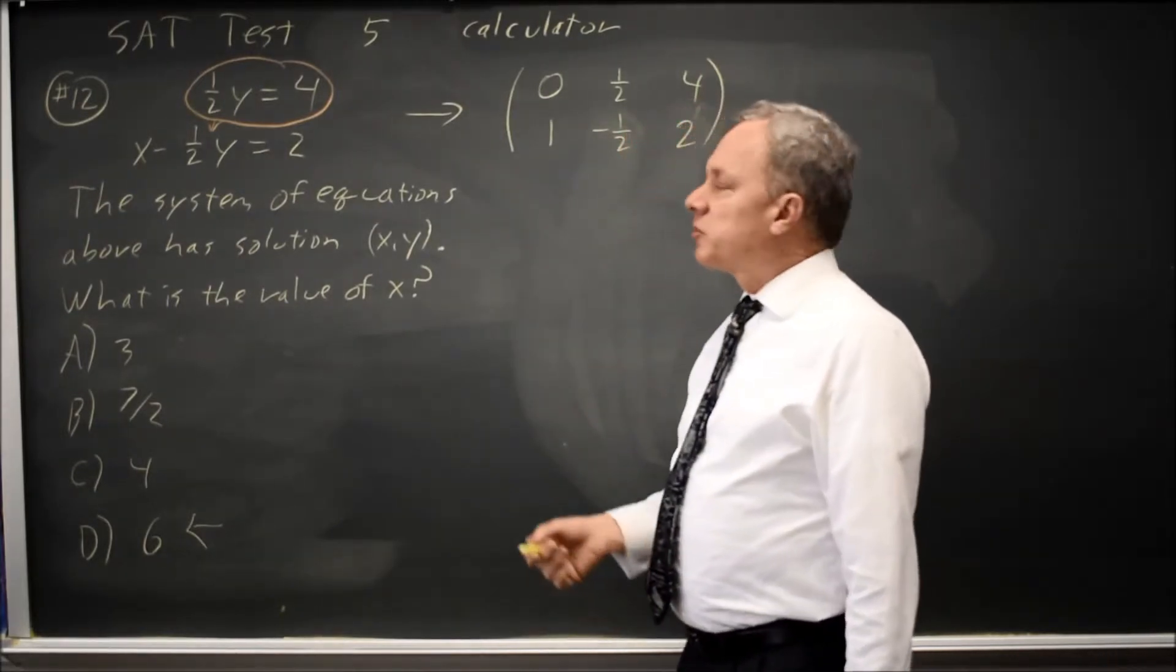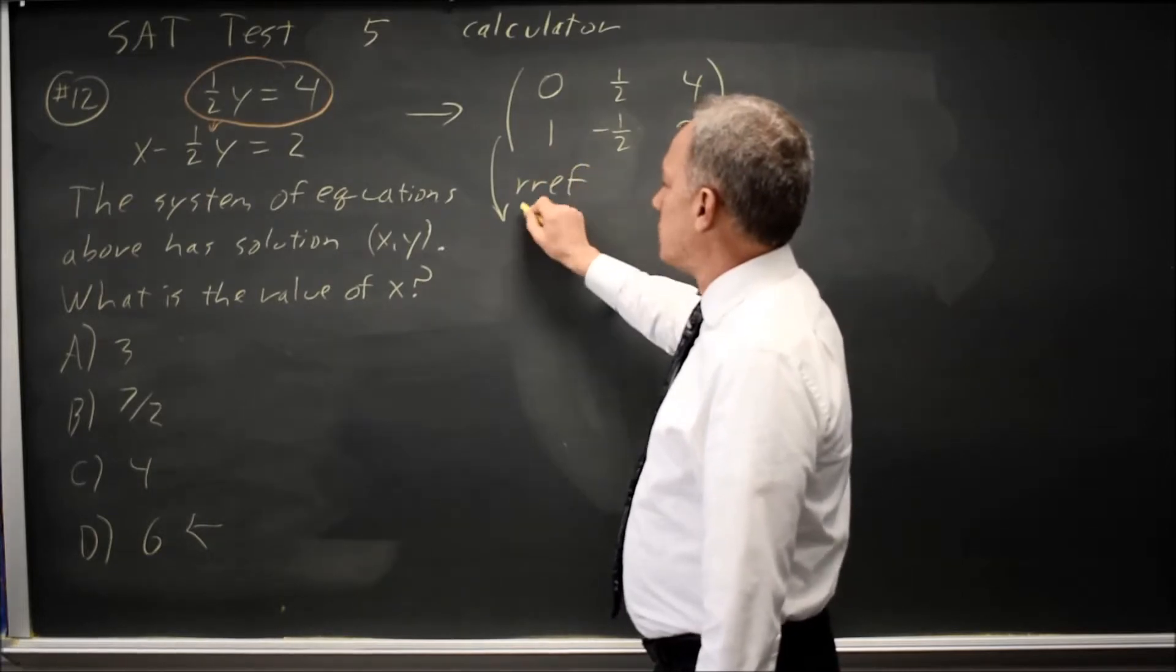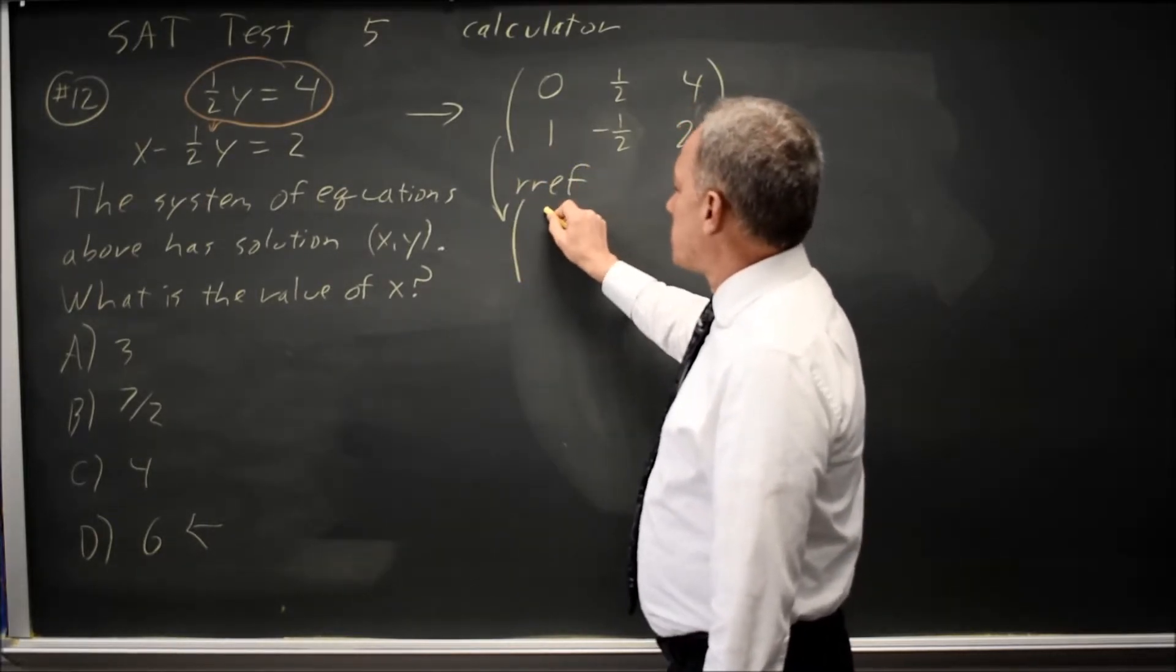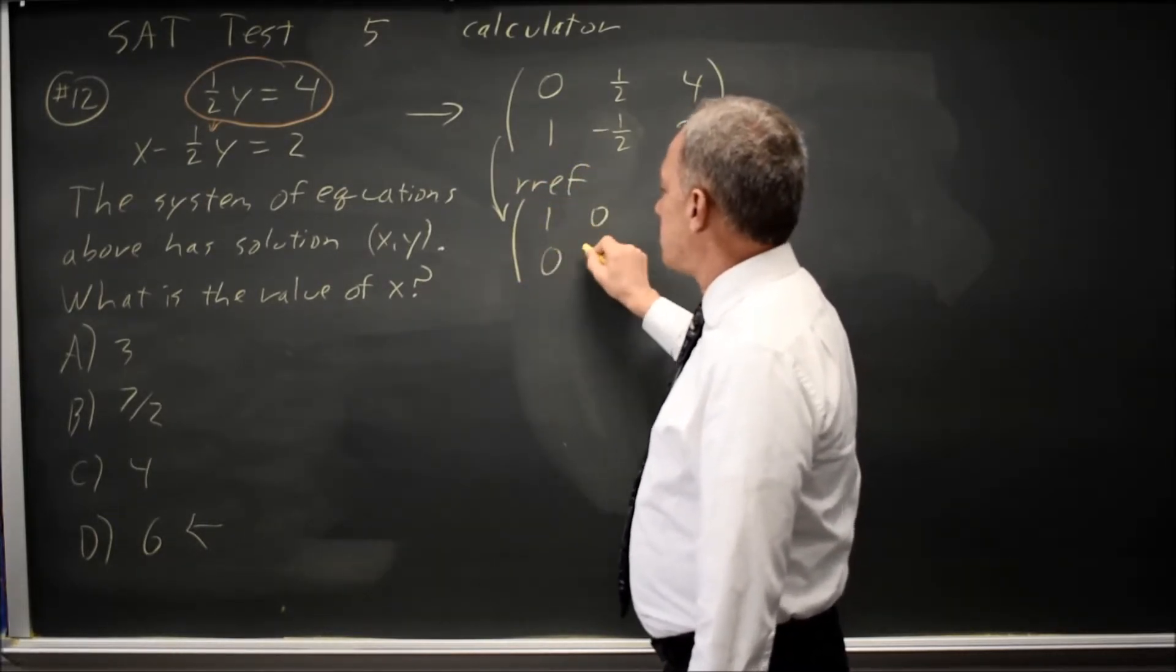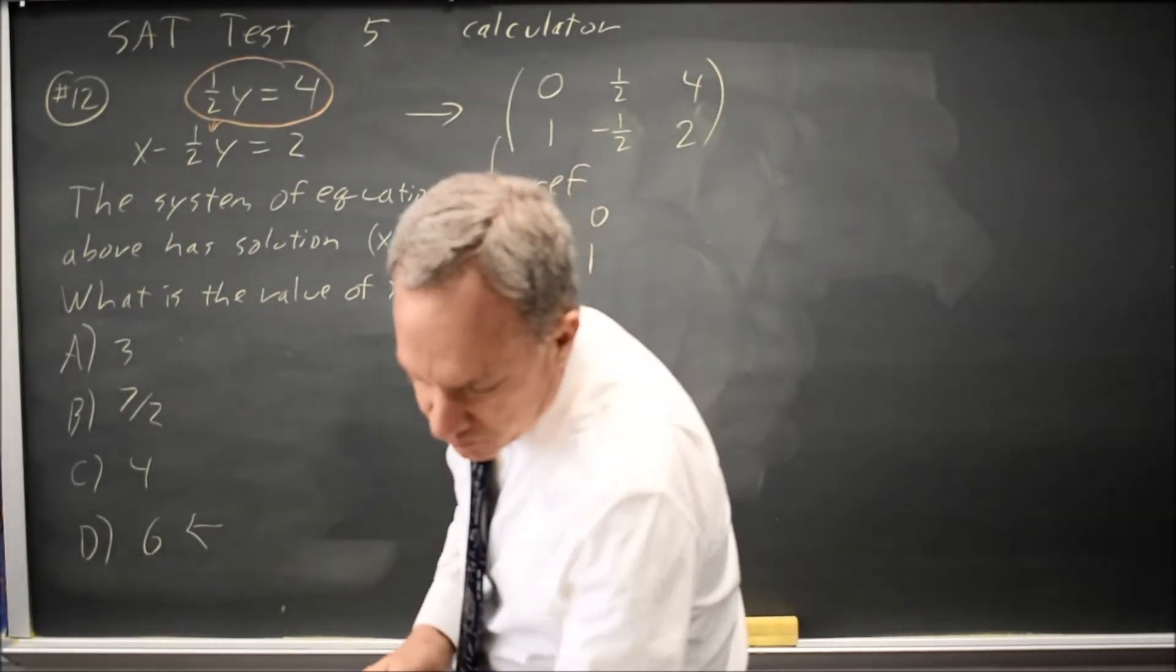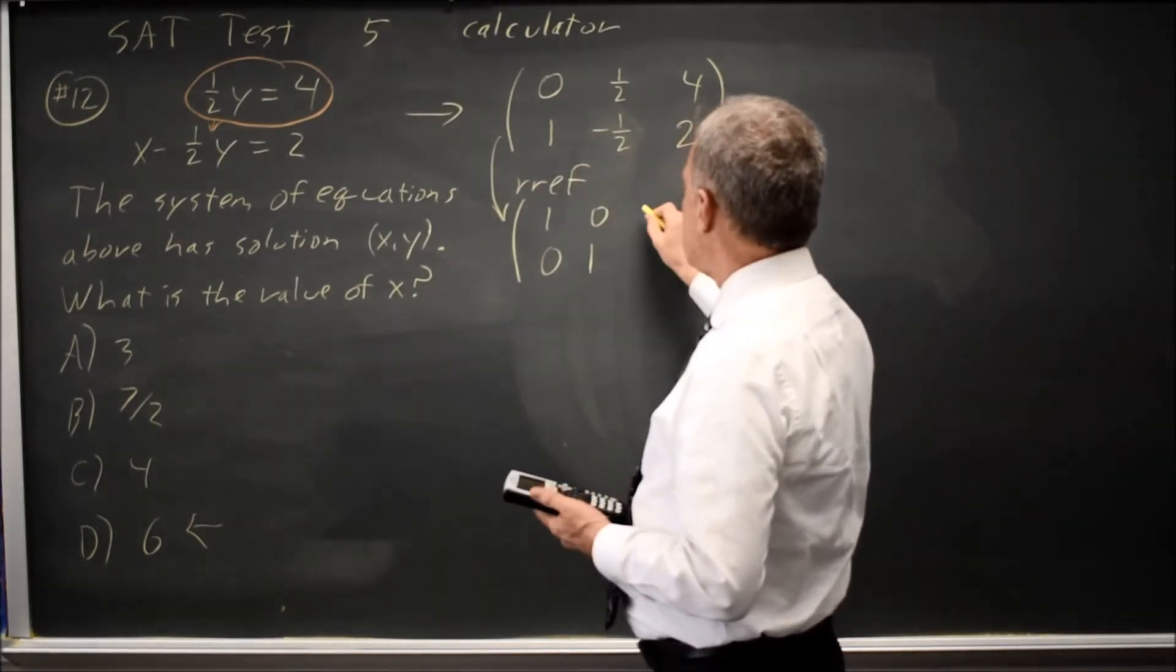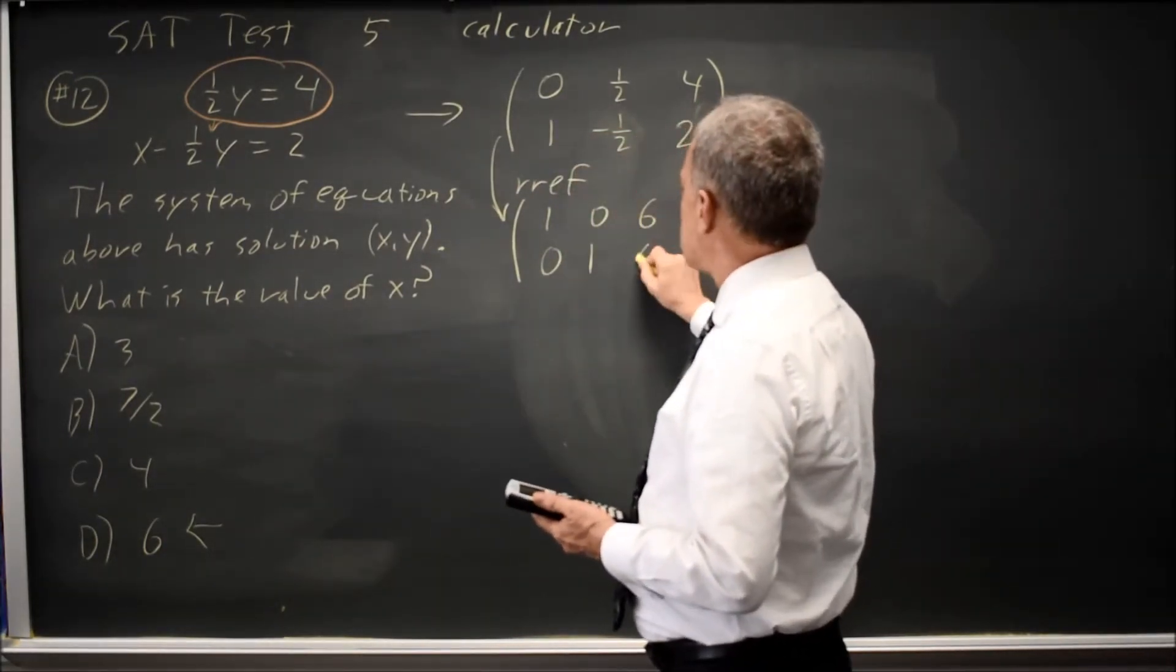If I enter that matrix into my calculator and ask for reduced row echelon form, I end up with something that looks like 1, 0, 0, 1, so long as there's a unique solution. And then the last column is 6, 8.